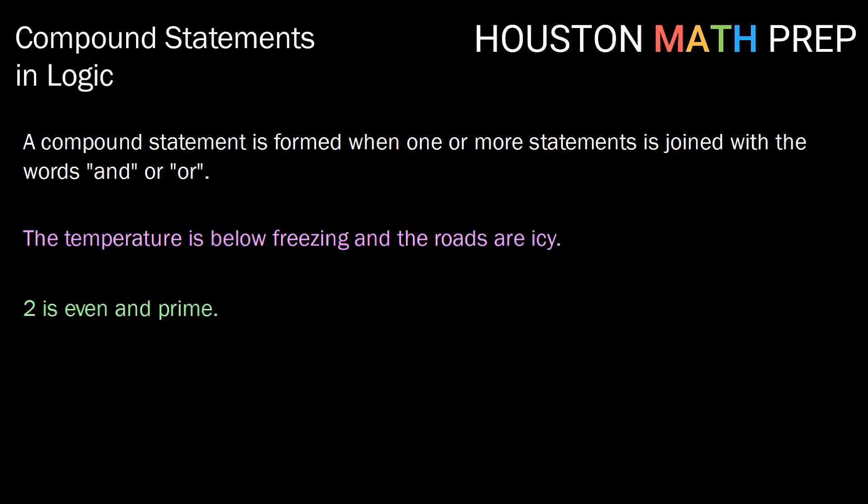Two is even and prime. Here we've shortened two statements. Two is even is a statement and two is prime is a statement and they've been joined with the word and. Three is less than five and five is less than eight. All of these are joined with the word and.